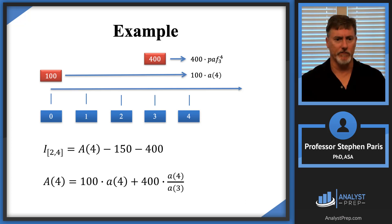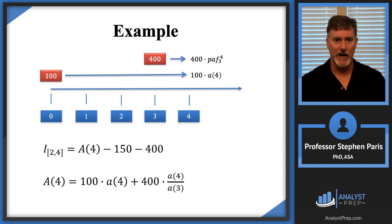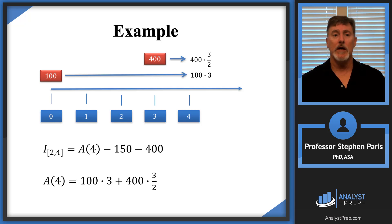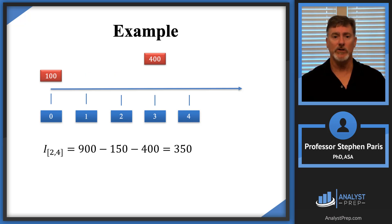Plugging in the values — A(3) = 2 and A(4) = 3 — the first term is 100 × 3 = 300, and the second term is 400 × (3/2) = 600, for a total of 900 in the account at time 4. The interest earned from time 2 to time 4 is therefore 900 − 150 − 400 = 350. The total interest earned between times 2 and 4 is $350.